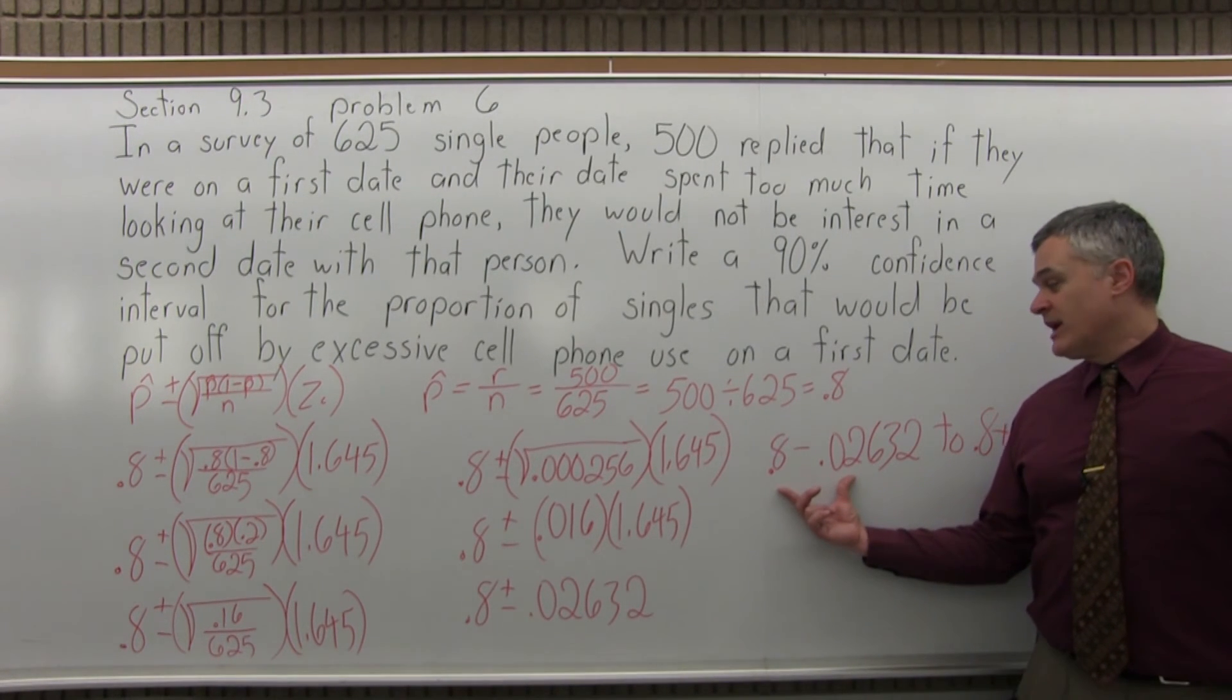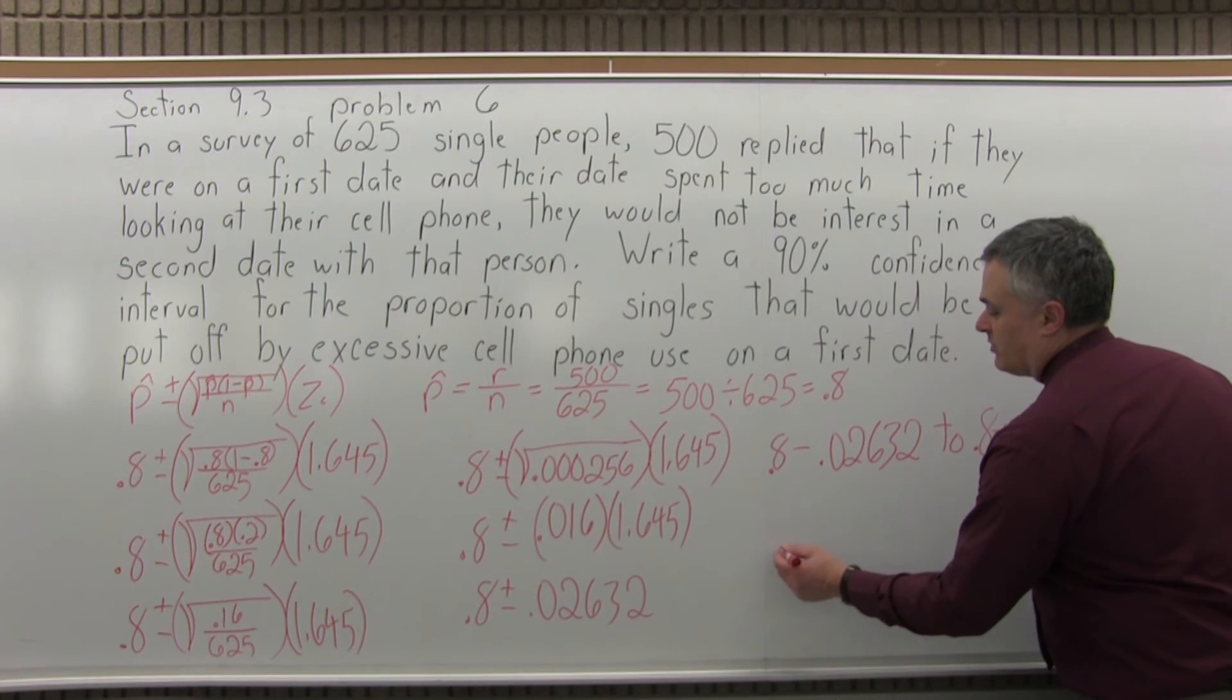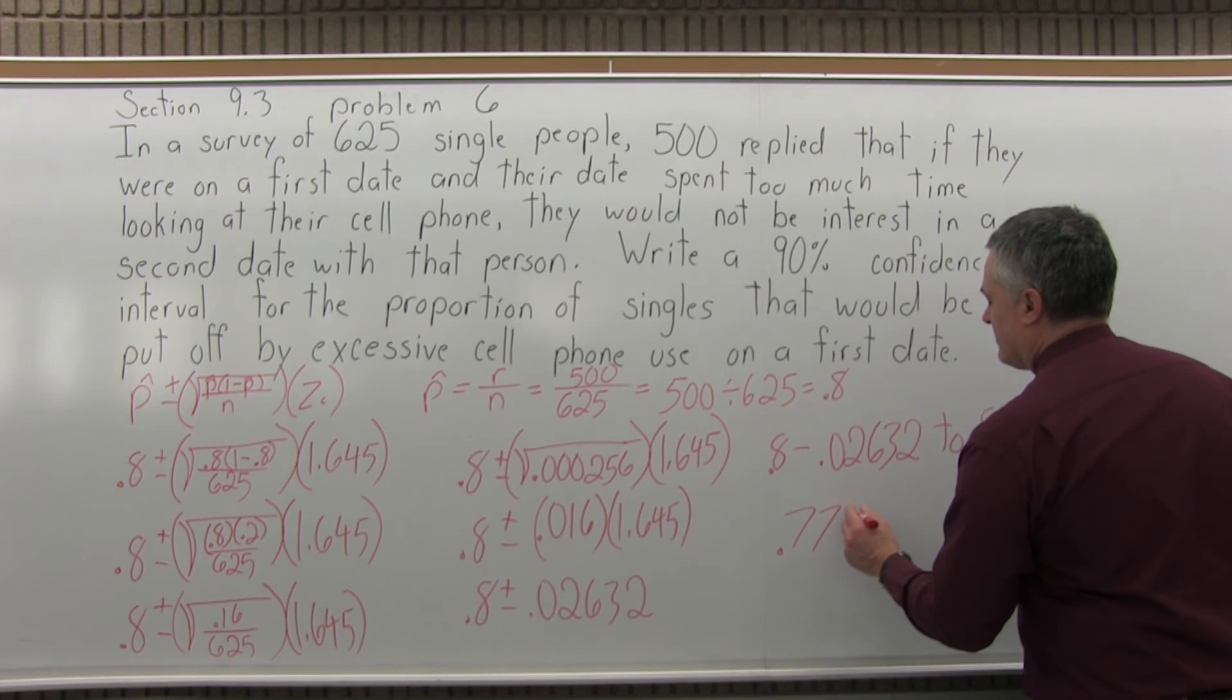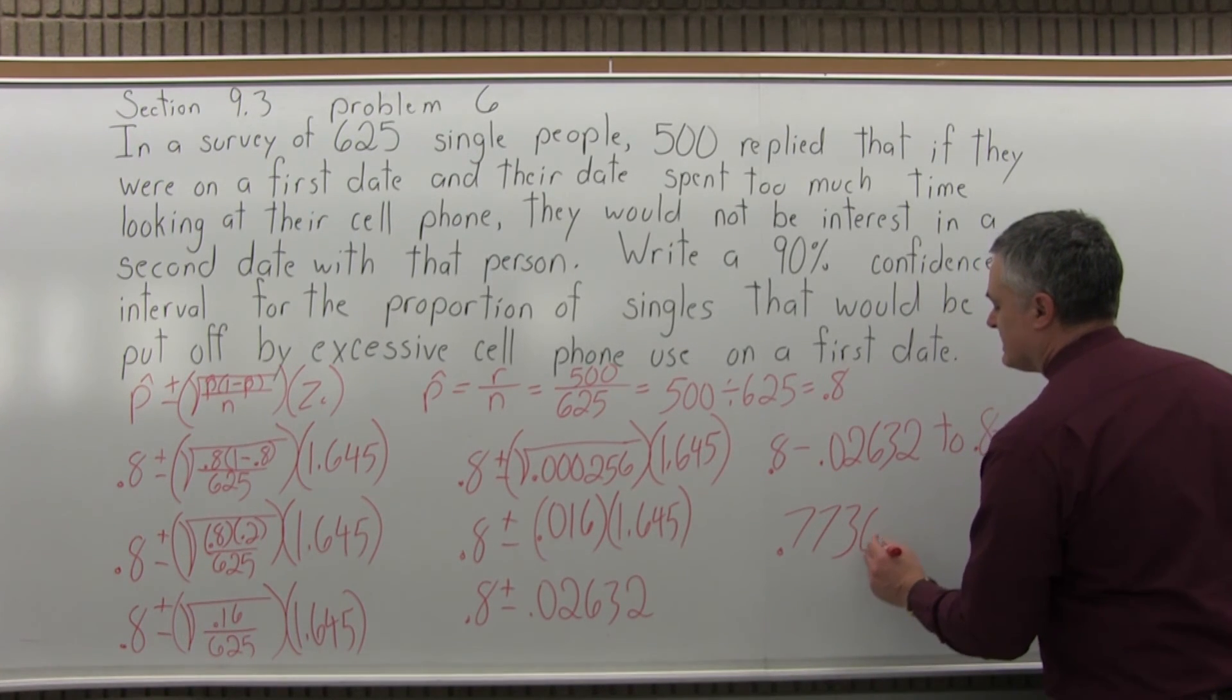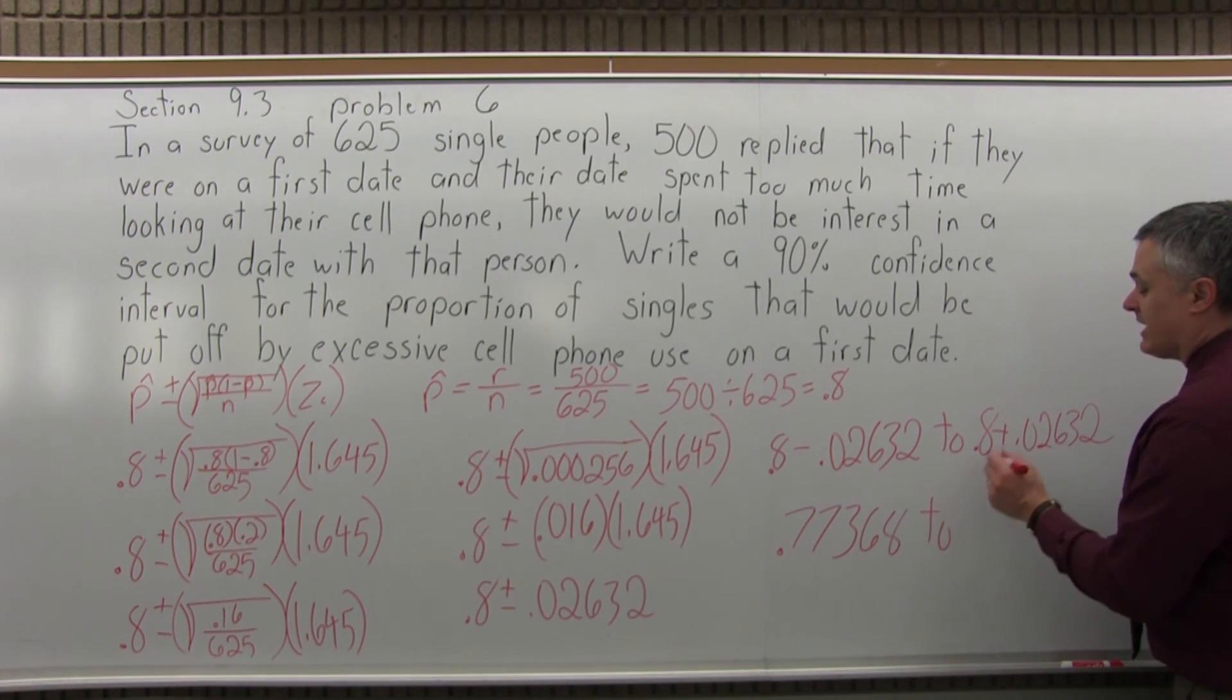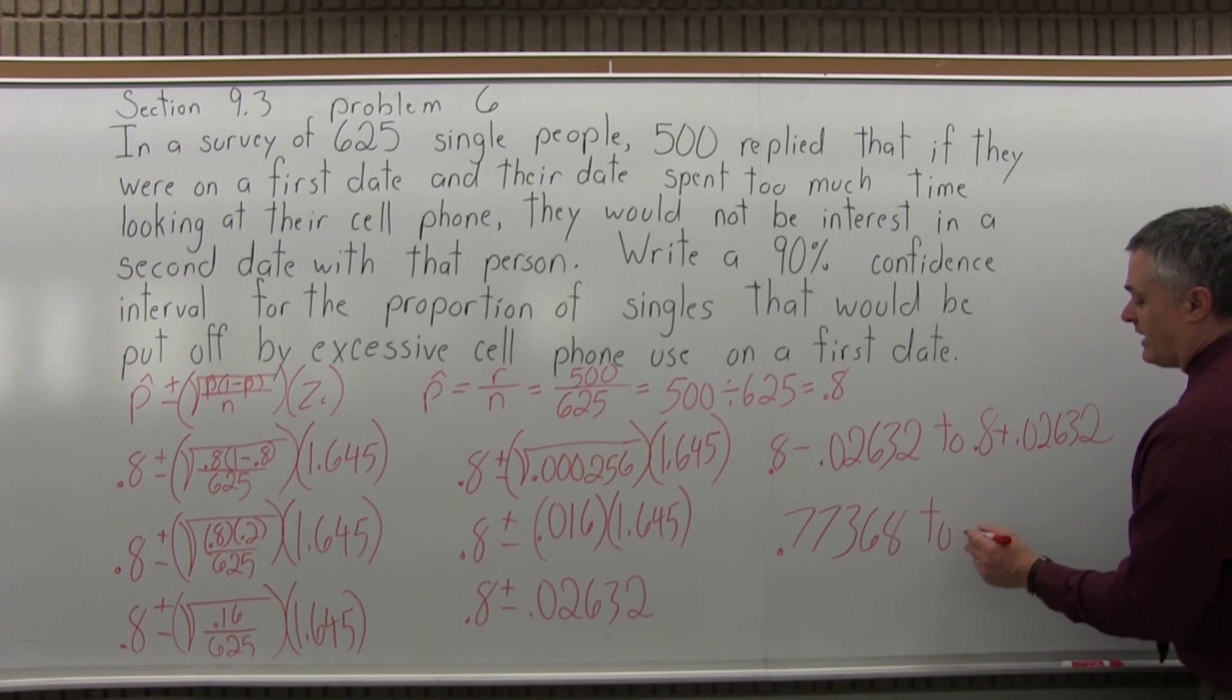So when I subtract, 0.8 minus 0.02632 will be 0.77368. That's the low end of my confidence interval. And the upper end, 0.8 plus 0.02632, will be 0.82632.